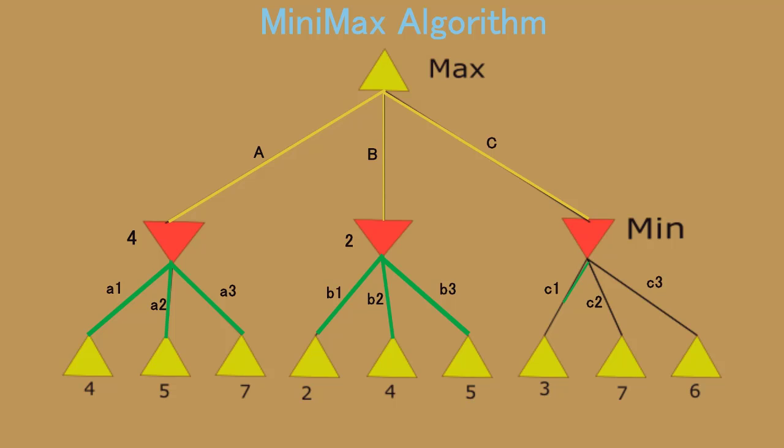Then we will expand the c node. We get 3 nodes: c1, c2, c3. The smaller value is 3, which is from c1. So c1 is selected. Now max 4 is selected. This is the solution of the minimax algorithm.